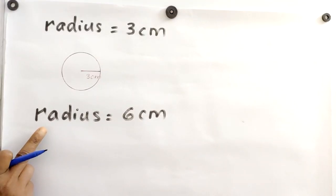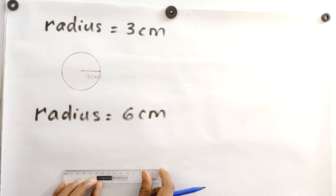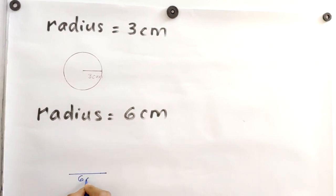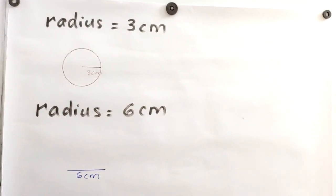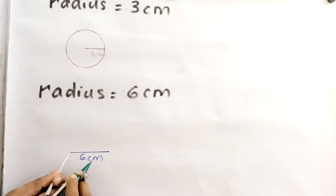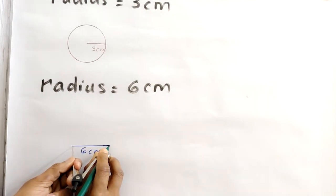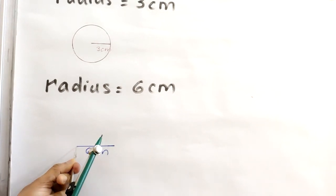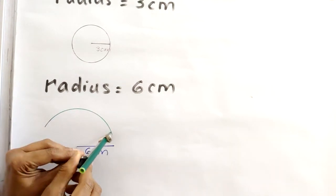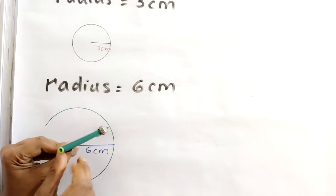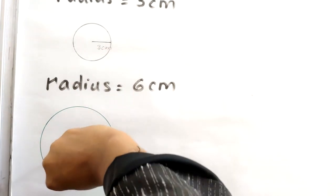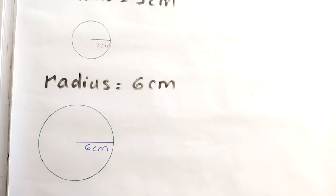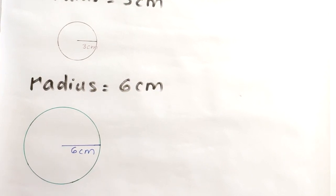Next, we are going to draw a circle of radius 6 cm. First we draw a line segment of 6 cm. This is the radius. Keep the metal tip of the compass on one end and the pencil tip on the other end. We must hold the black portion of the compass and rotate it to easily draw the circle.